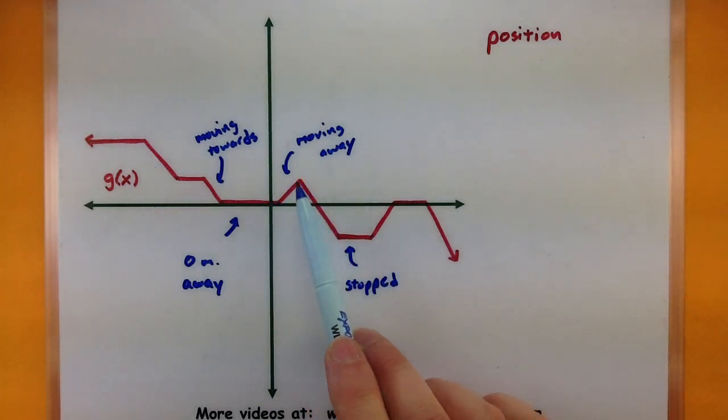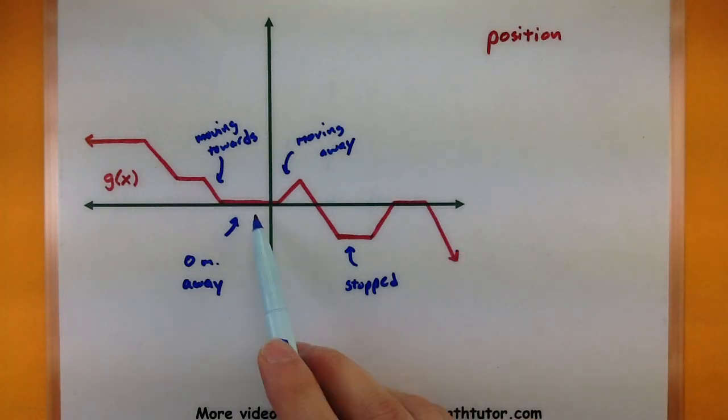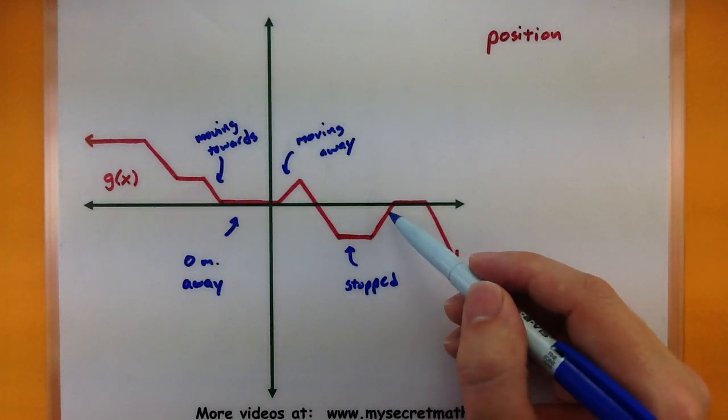And when we're moving away, like over here, then essentially we've got a positive slope. Now it does matter on what side of our zero position we're at, because here,